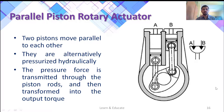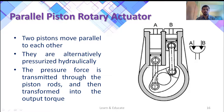The next type is the parallel piston rotary actuator. There are two parallel pistons which are alternately pressurized through ports A and B. Whichever the type is, the hydraulic rotary actuator is represented by the same symbol. The pressure force is transmitted through the piston rods, and a maximum swivel angle of 100 degrees is possible using this type.